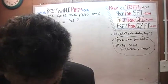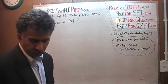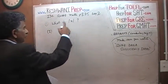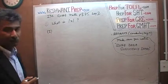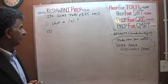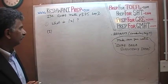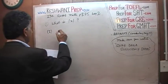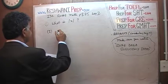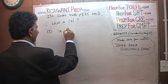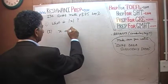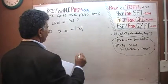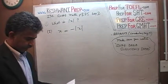Let's take a look at the first question. The question is: what is the absolute value of X? The first statement tells us that X equals negative of the absolute value of X.